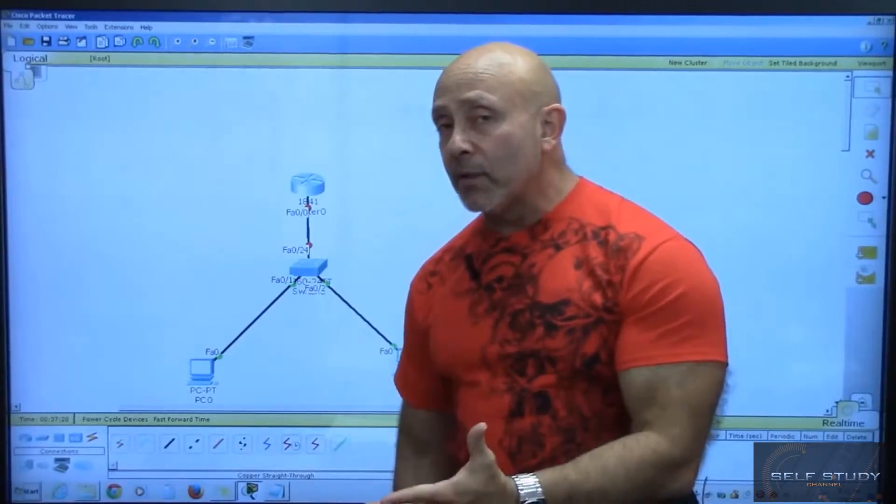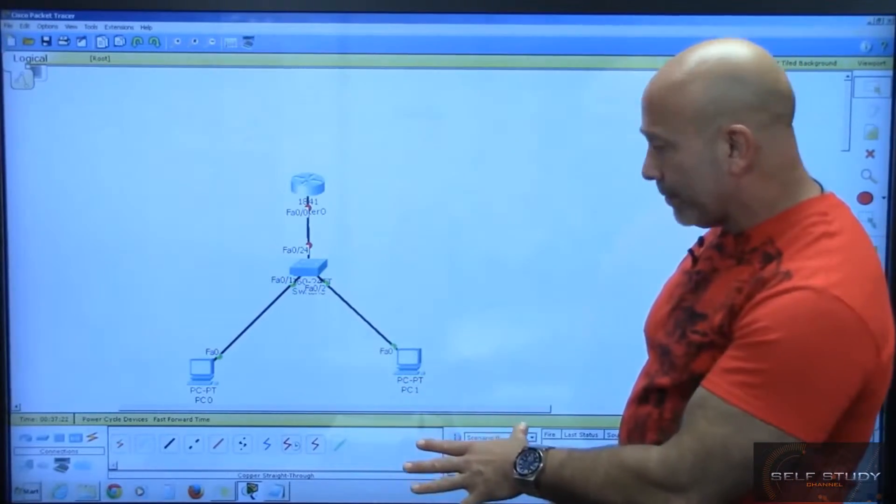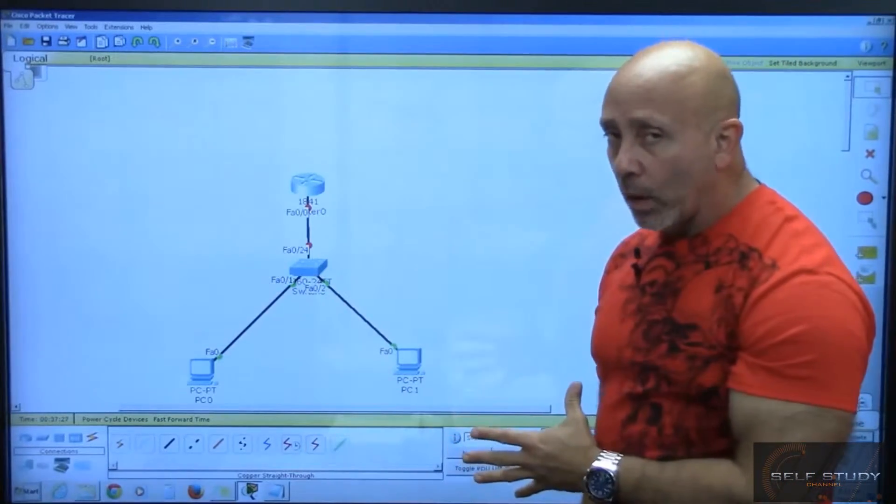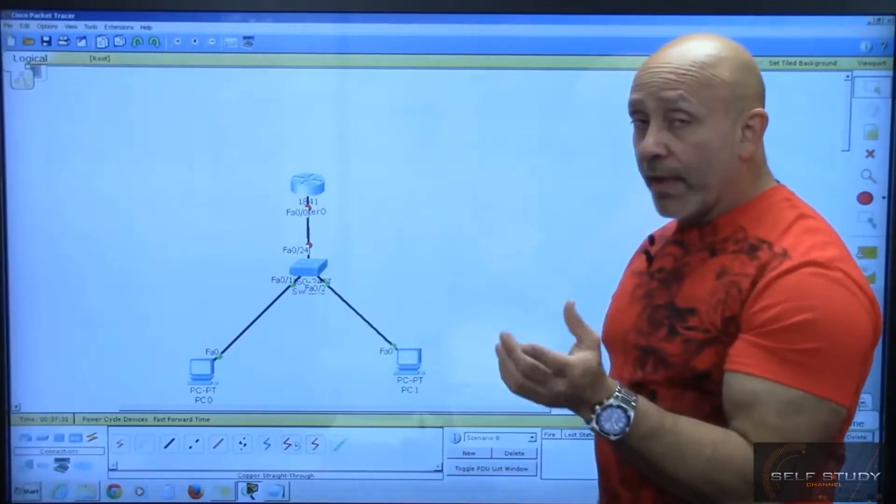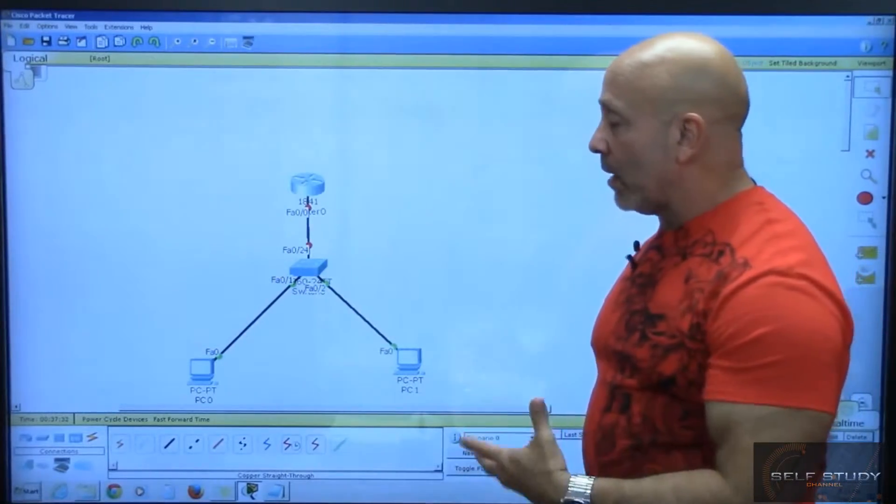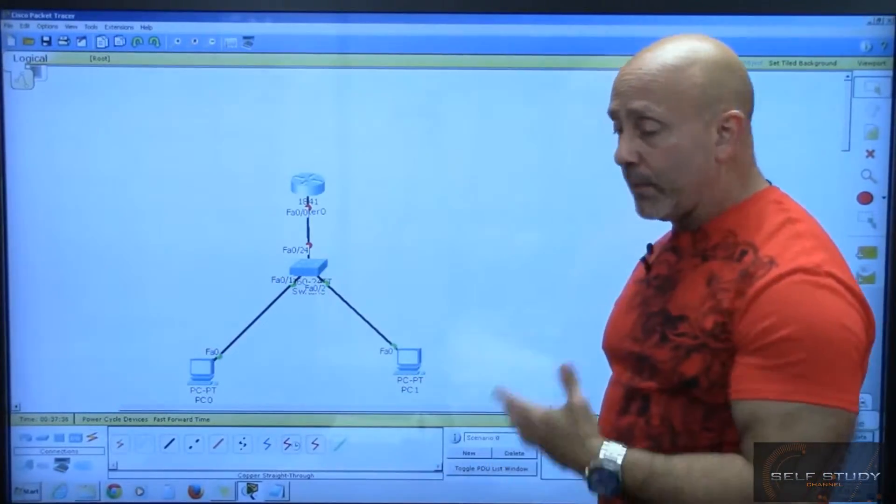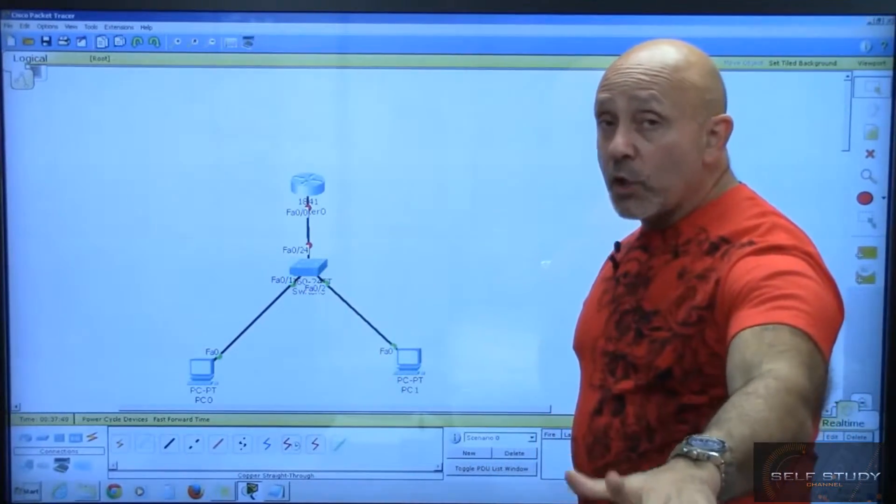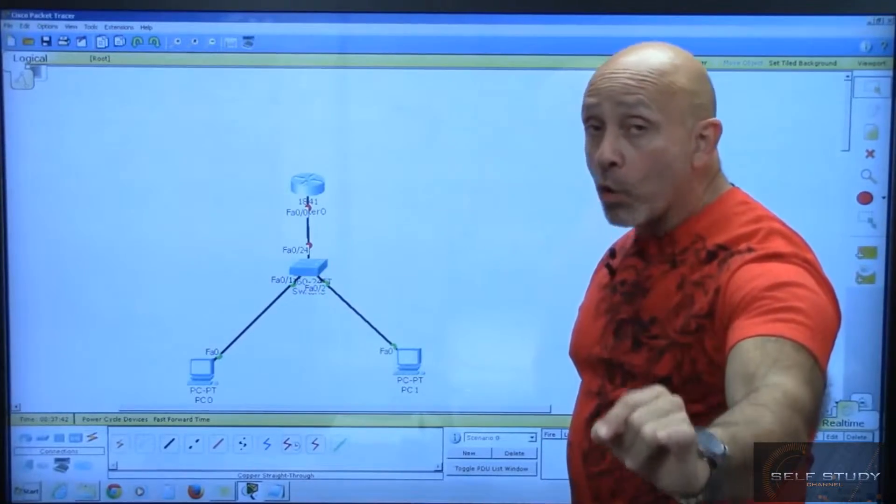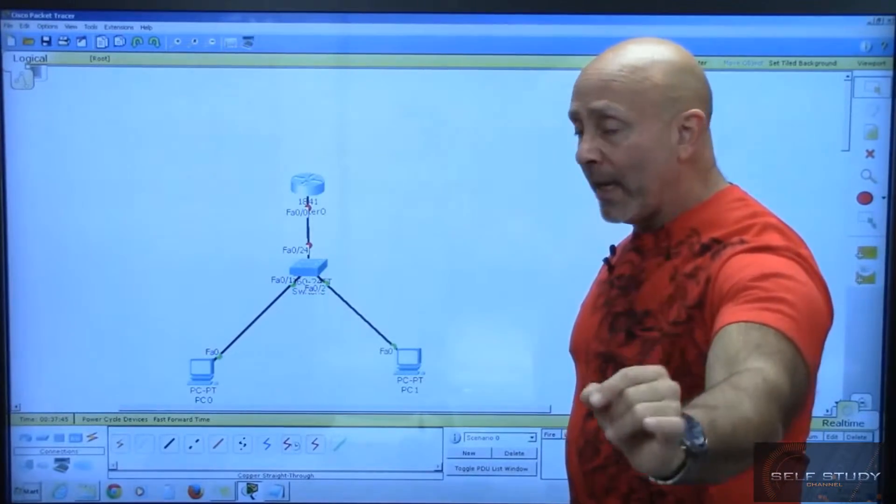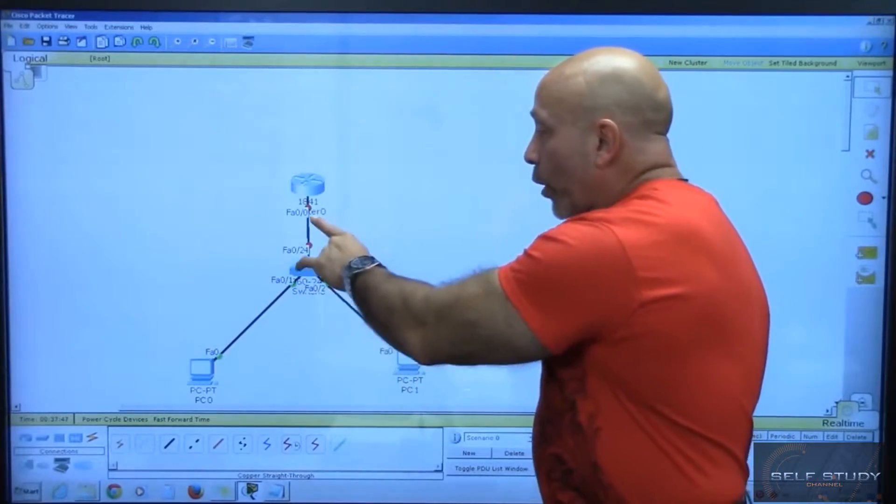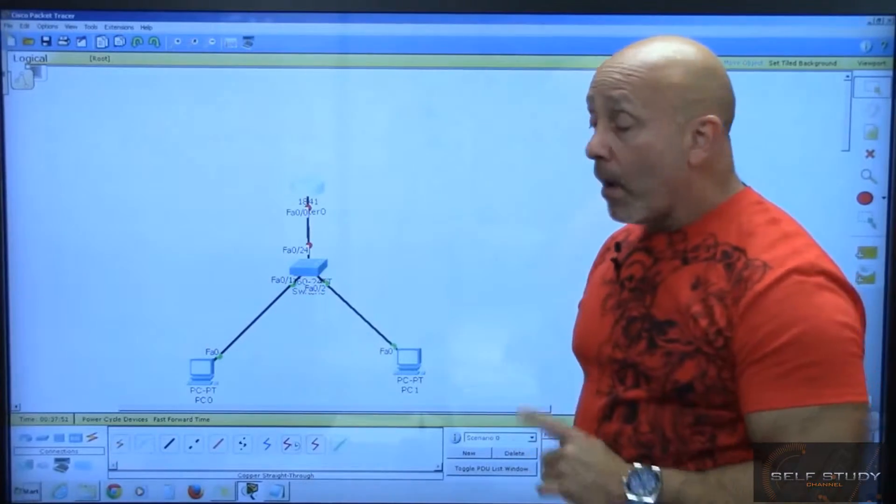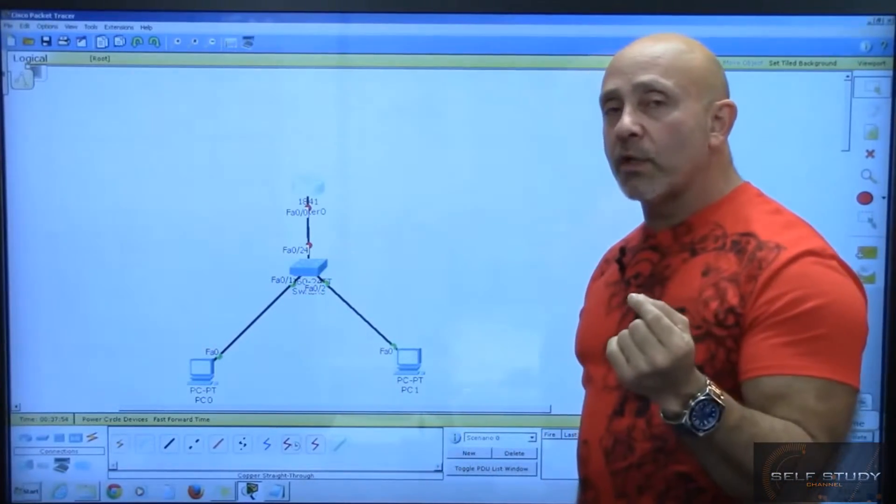What's important here, what we're looking at, is a very simple topology. What we have here is an Ethernet network. We have a switch, and we'll talk about it deeper in other lessons. We have each port, and remember this, each port on a switch is its own collision domain. Therefore, we have one, two, three collision domains right there.